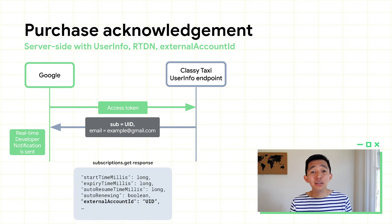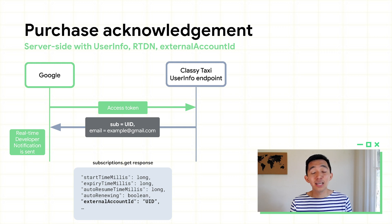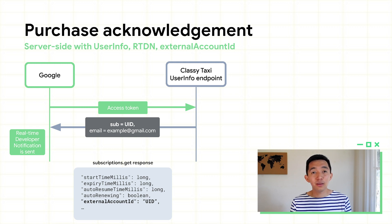Later, after you receive real-time developer notifications for the new subscription, you'll call subscriptions.get to get the full purchase object. Here you'll find external account ID has been set to the sub value provided in your user info response. Since you know which account the subscription belongs to, you can now register the subscription with that account and acknowledge the purchase with the Google Play Developer API.